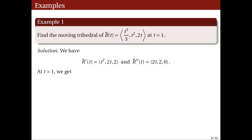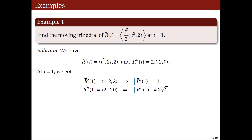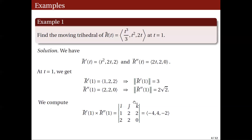Setting t = 1, we get r'(1) = (1, 2, 2), whose length is 3, and r''(1) = (2, 2, 0). We next compute the cross product of r'(1) with r''(1) using the determinant of the matrix whose first row is (i, j, k), second row is the components of r'(1), and third row is the components of r''(1).